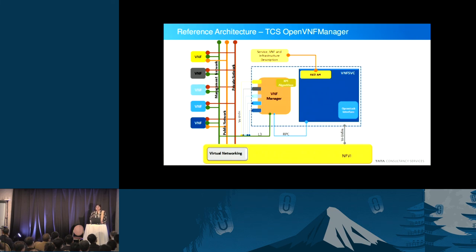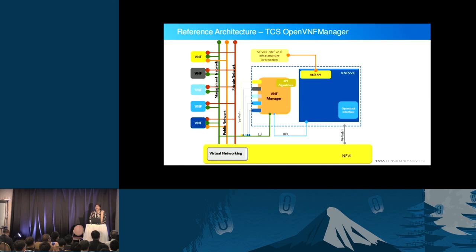This is a high-level reference architecture of the solution we have built. You see a big blue box marked as VNF SVC — this is a centralized daemon that runs on the OpenStack controller. It provides a REST API and is responsible for onboarding. The descriptors are given to this component; it acts like a typical compiler, understands each aspect of the descriptors, converts them into metadata, and puts them into its internal repositories. When asked to create a service, we save a lot of time by defining it in a format that gives us data readily deployable on OpenStack.